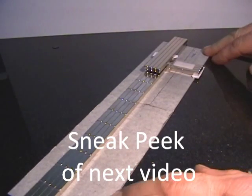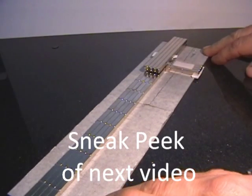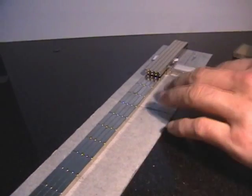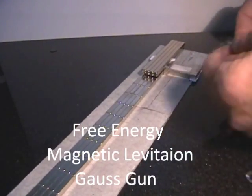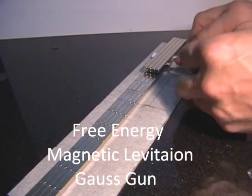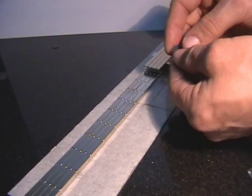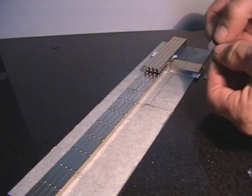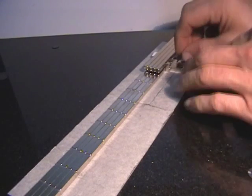What you're looking at at the moment is a world first from AVA Magnetic Levitation Australia. This is a free energy, magnetic levitation gauss gun. These are the particles that it fires out, and don't worry mum or dad, if your kids are getting into this sort of thing, it's not dangerous whatsoever.